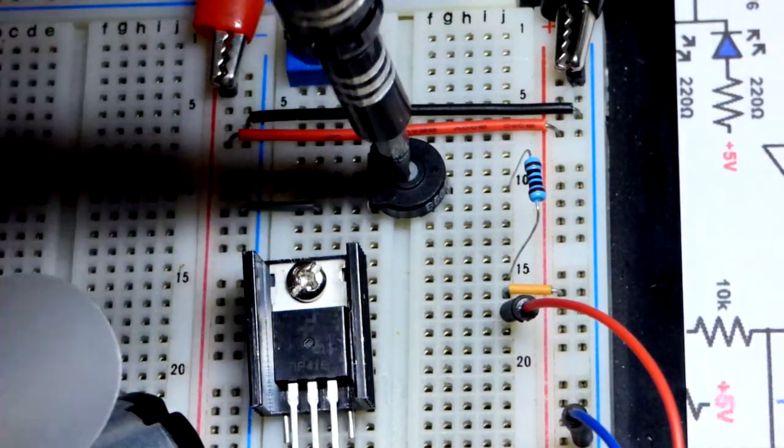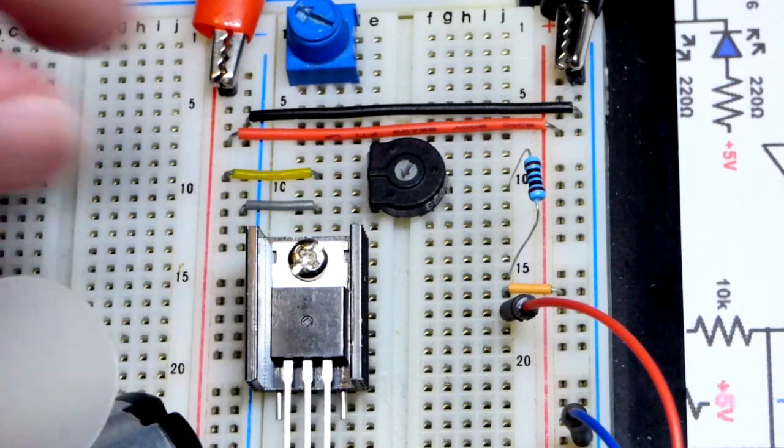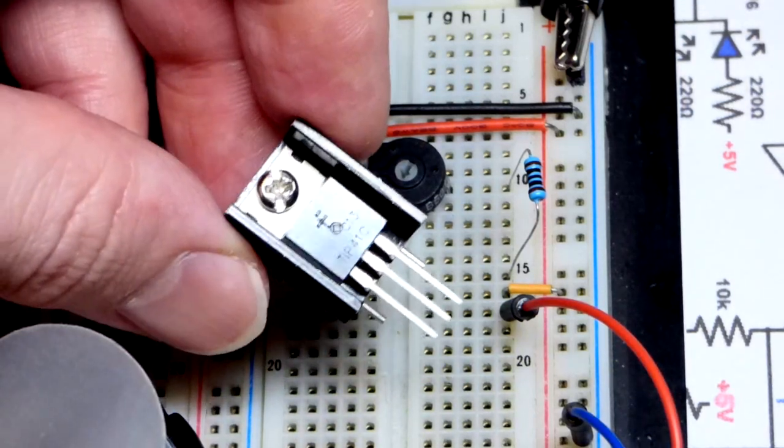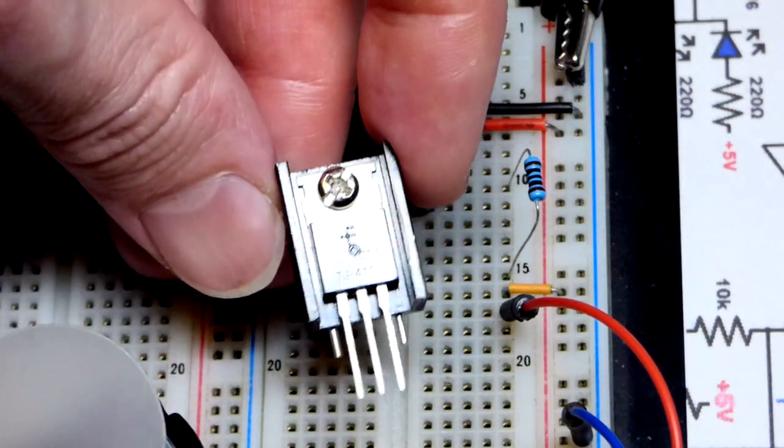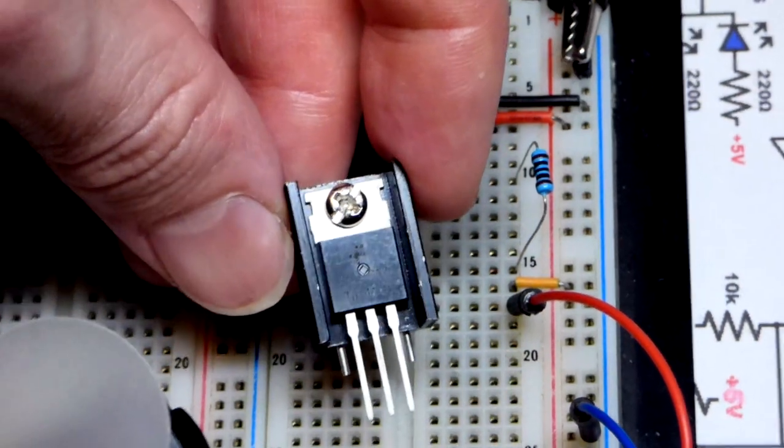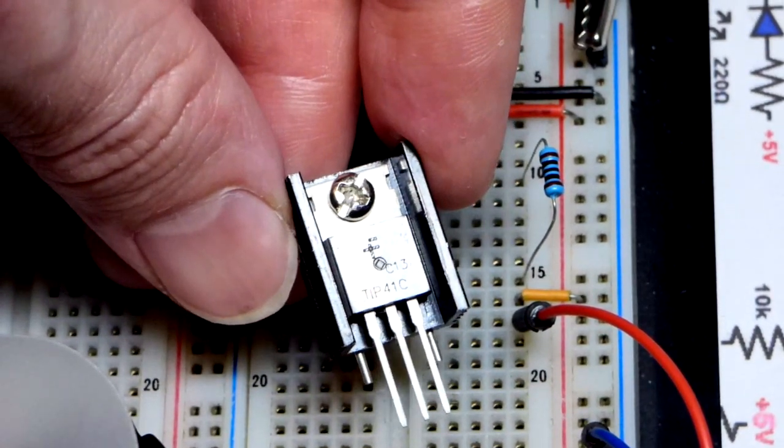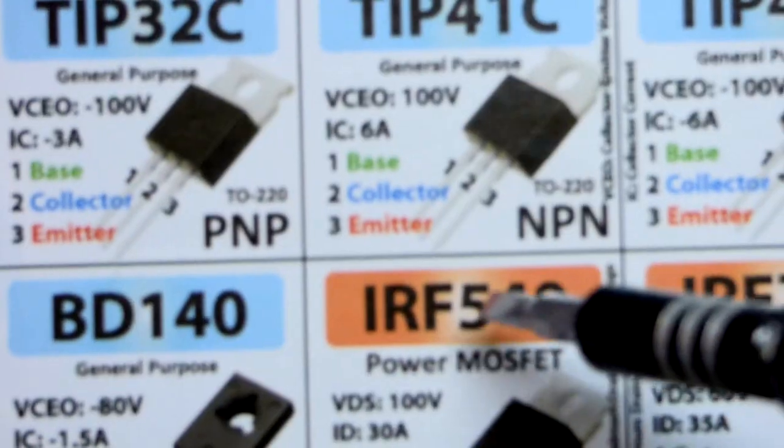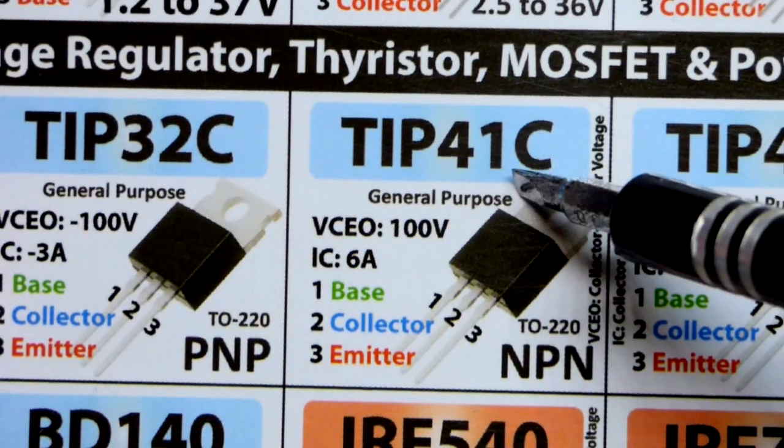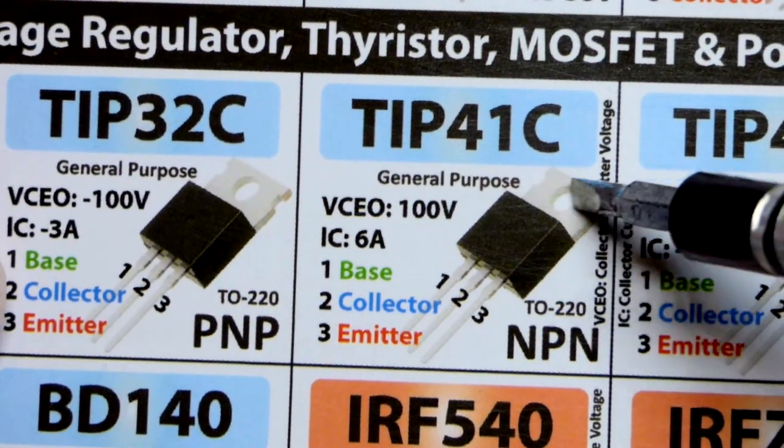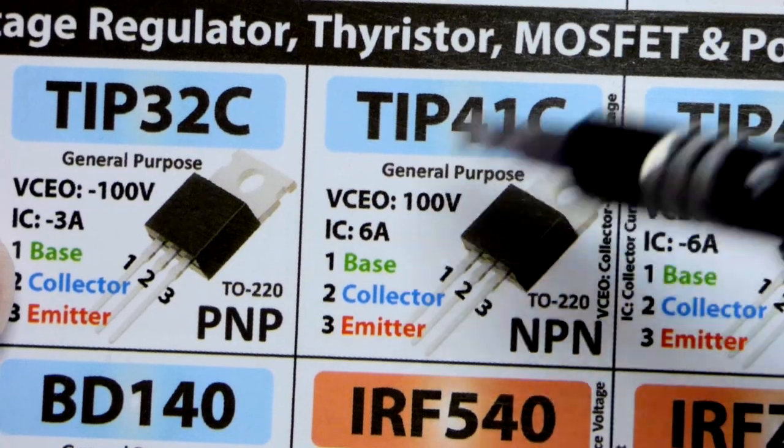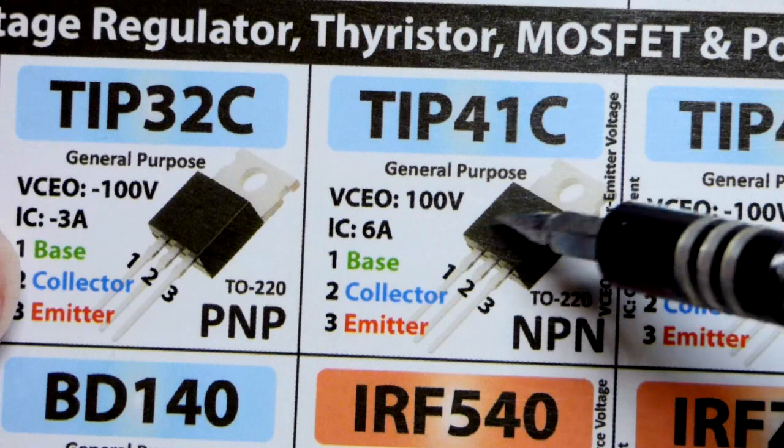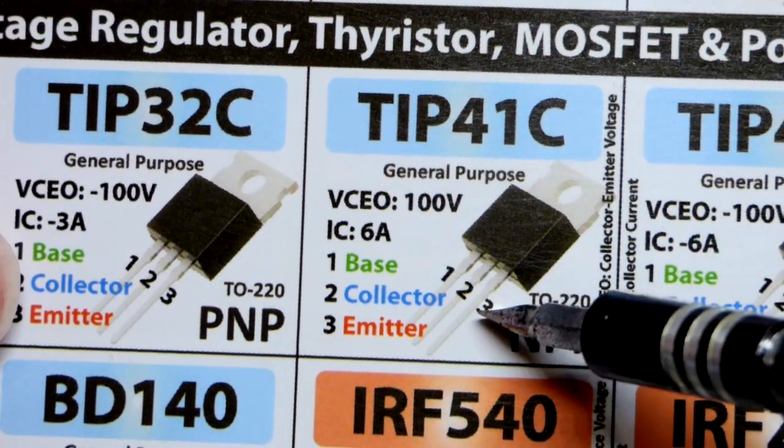We're going to connect this transistor here. It's a lot larger than the TO-92 package transistors - this is the TO-220. Let's see if I can get closer... This is the TIP41C, and I got it from this kit right here. When you're looking at the flat side, left pin is base, middle pin is collector, and the right pin is the emitter.